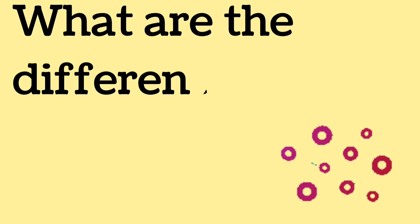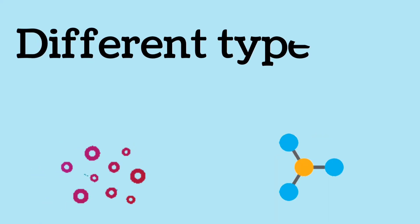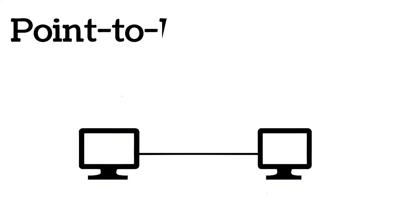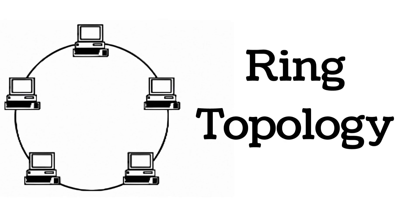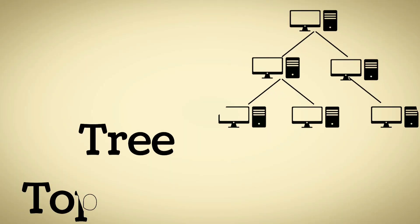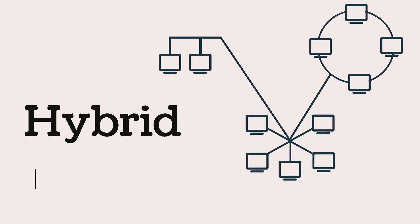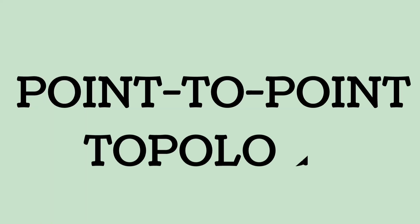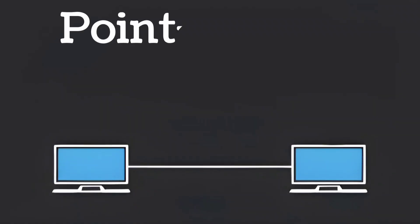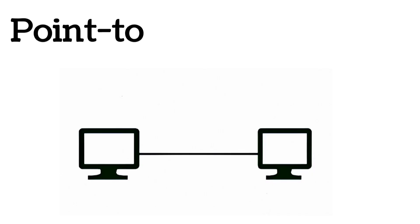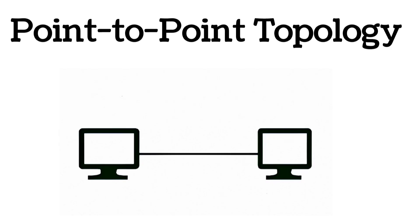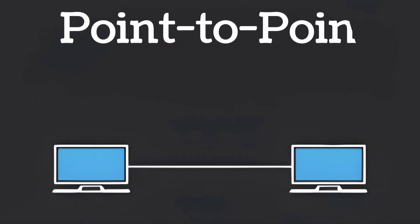What are the different types of network topologies? The different types are: point-to-point topology, bus topology, ring topology, star topology, tree topology, mesh topology, and hybrid topology. Point-to-point topology is the simplest type, where two devices are directly connected to each other by a single link.